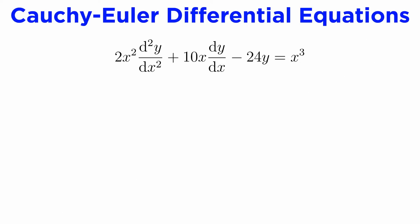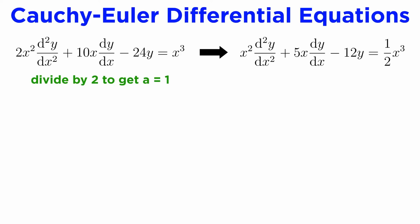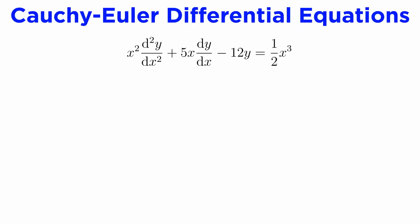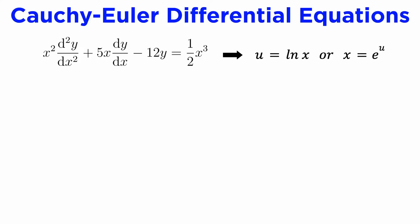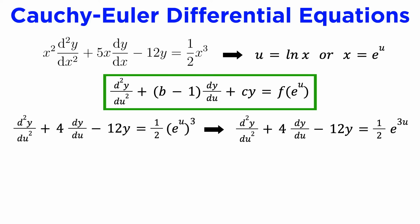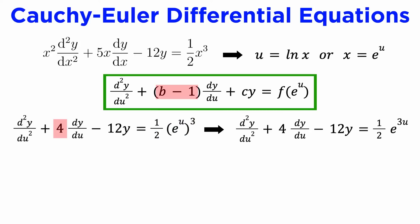Suppose we want to solve the DE: 2x² times d²y/dx² plus 10x times dy/dx minus 24y equals x³. We can see that this is a Cauchy-Euler DE, but to get it into standard form we first need to divide both sides by 2, so that the leading term has 1x². Now we have a standard Cauchy-Euler DE with coefficients b equals 5, c equals negative 12, and f of x equals one-half x³. By using the substitution x equals e to the u, our DE will transform into y'' + 4 dy/du minus 12y equals one-half e to the 3u, where we have subtracted 1 from b and inserted e to the u into f of x on the right side.